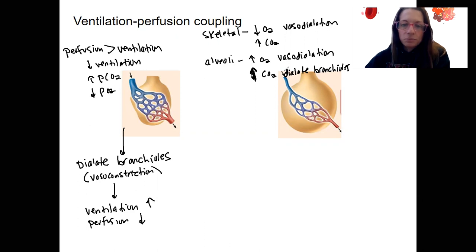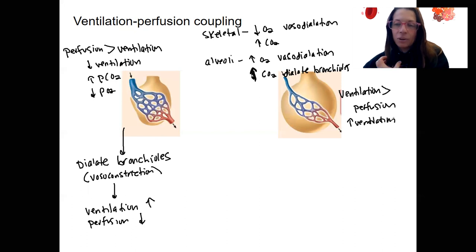So this is going to cause ventilation to go up and or perfusion to go down. On this side here, we've got ventilation happening at a higher rate than perfusion. This could be due to high ventilation, so bronchodilation. It could be due to low PCO2 and high PO2.